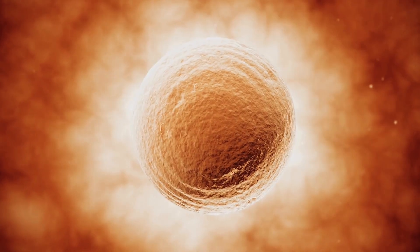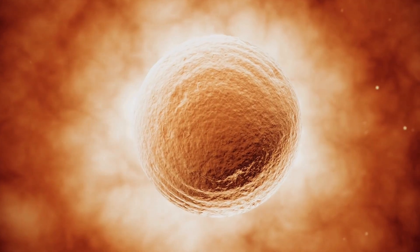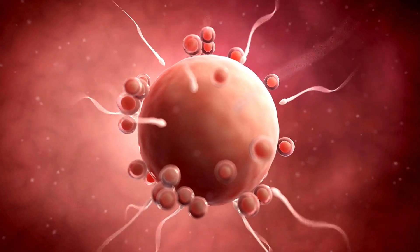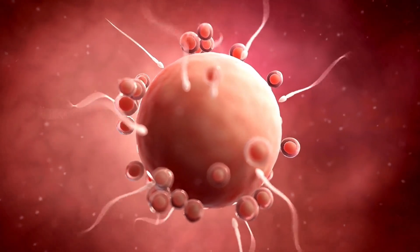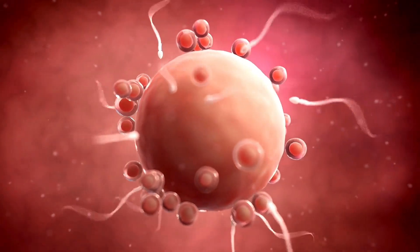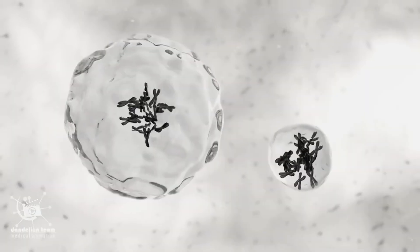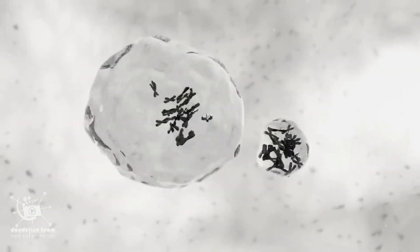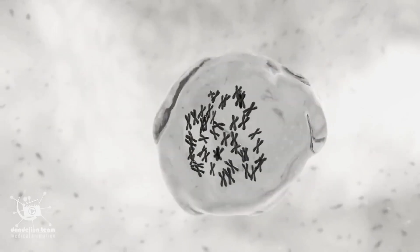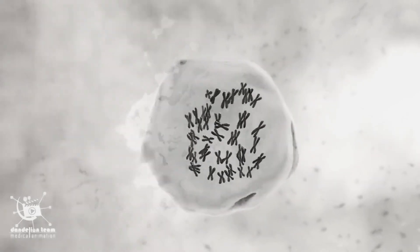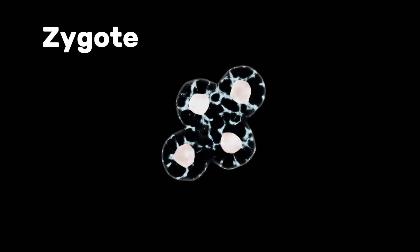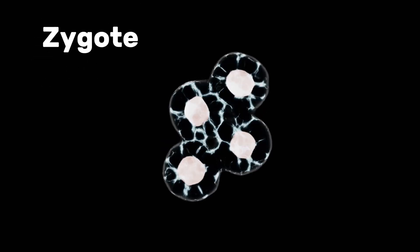Once a sperm penetrates, the egg's outer layer hardens, preventing additional sperm from entering. The male and female chromosomes combine to form a new cell called a zygote.